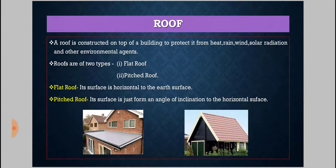A pitched roof has its surface forming an angle of inclination to the horizontal surface. This kind of roof requires a special arrangement to hold up the roof members in position. These members are known as purlins and rafters. Rafters are inclined members provided perpendicular to the purlins, while purlins are horizontal members provided perpendicular to the rafters.